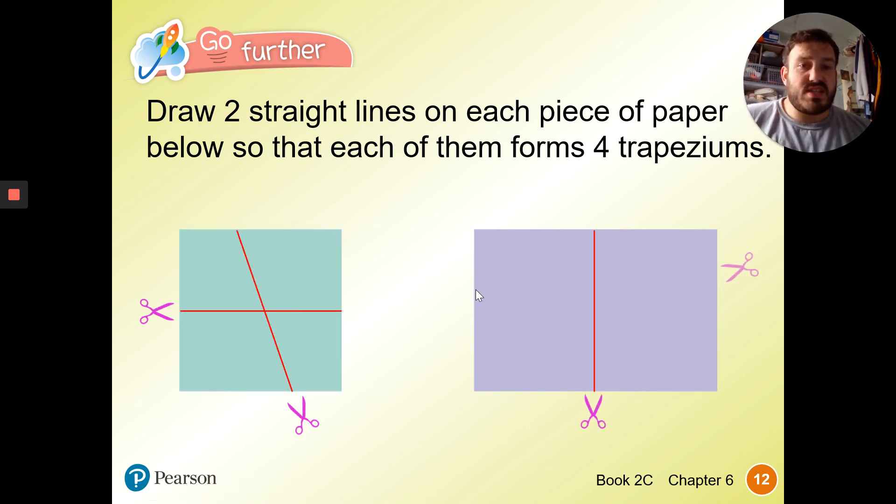And look, we've got to do the exact same on a rectangle. So one line going through the middle, create two more rectangles, and then we draw a line. We've got one, two, three, four trapeziums.